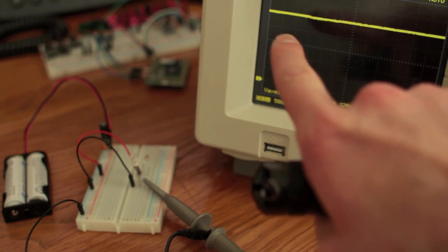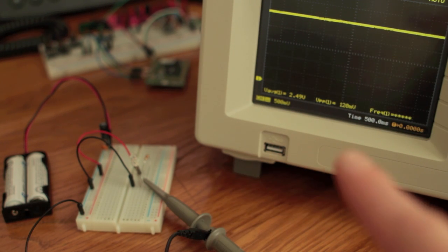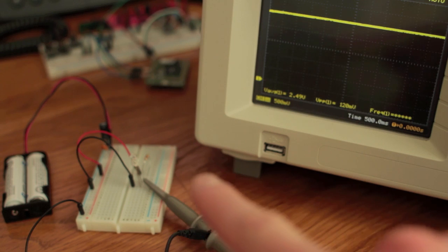So here's our setup. We're reading about 2.5 volts consistently on the scope at the moment, and that's because that's what the battery provides. There's very little light falling on the circuit. When we shine a light, that will change.